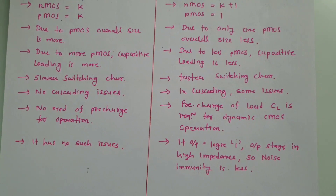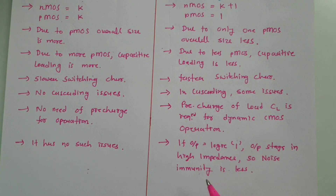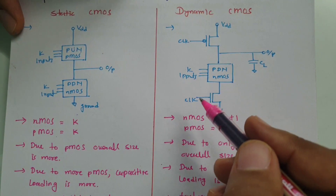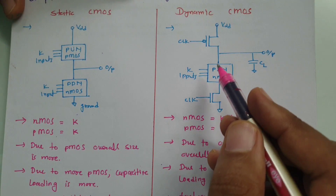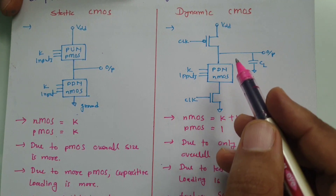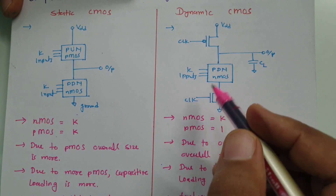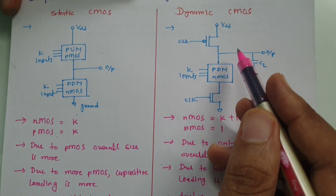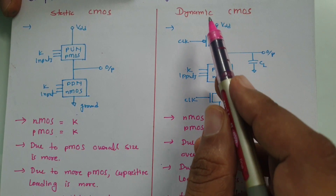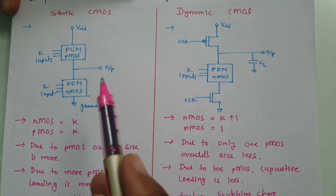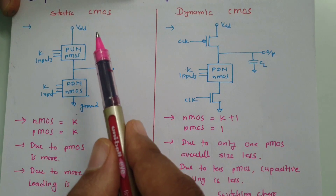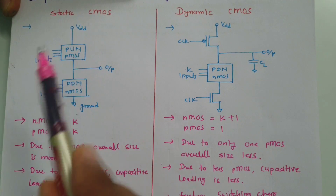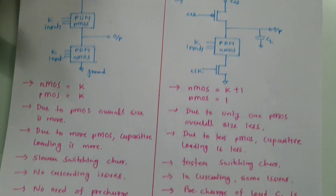When talking about the working of dynamic CMOS, as explained in previous videos, because of charge sharing there is leakage of charge which occurs in dynamic CMOS, while leakage of charge does not happen in static CMOS.